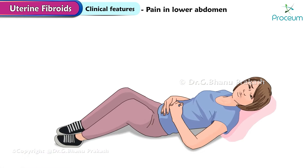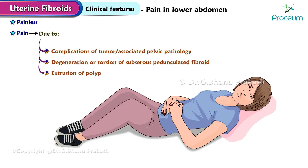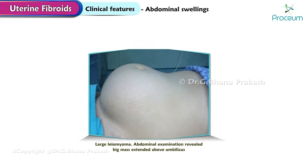Pain in the lower abdomen: fibroids are usually painless. Pain may be due to some complications of the tumor or due to associated pelvic pathology. Pain can also be due to degeneration or torsion of a subserous pedunculated fibroid, or due to extrusion of a polyp. Abdominal swellings: noticed as a lump; the patient may have a sense of heaviness in the lower abdomen.